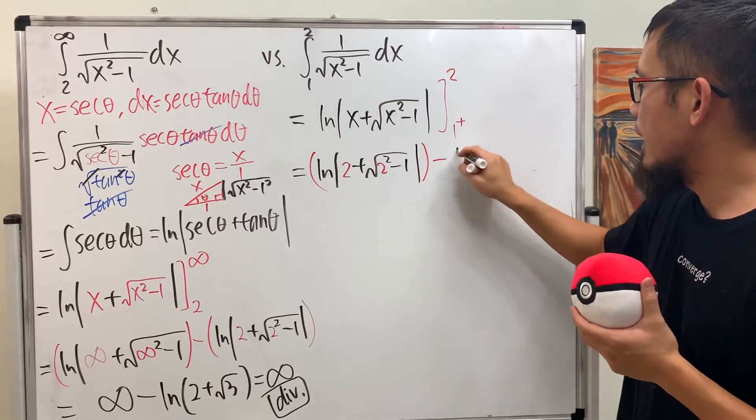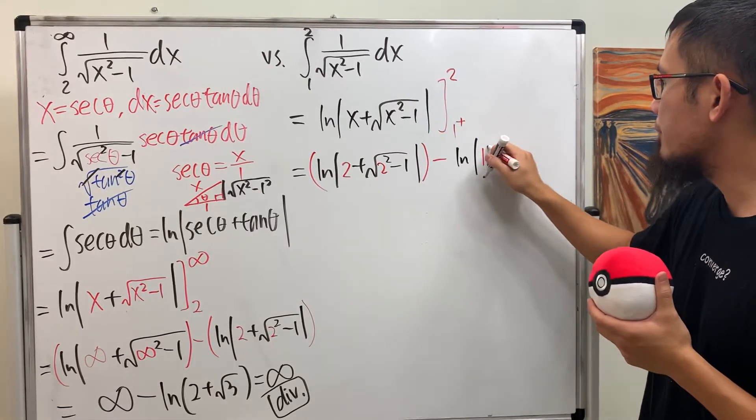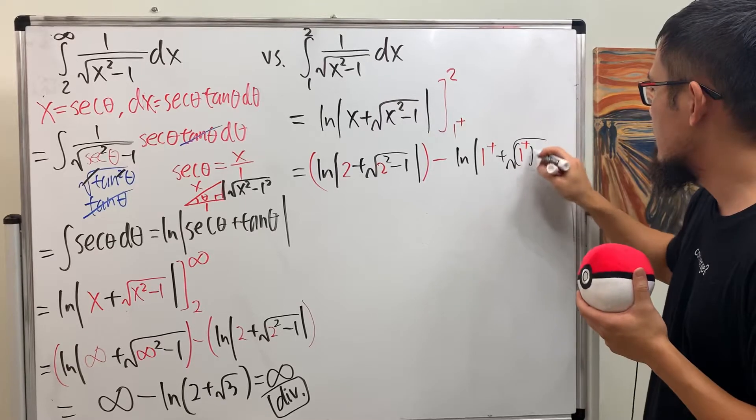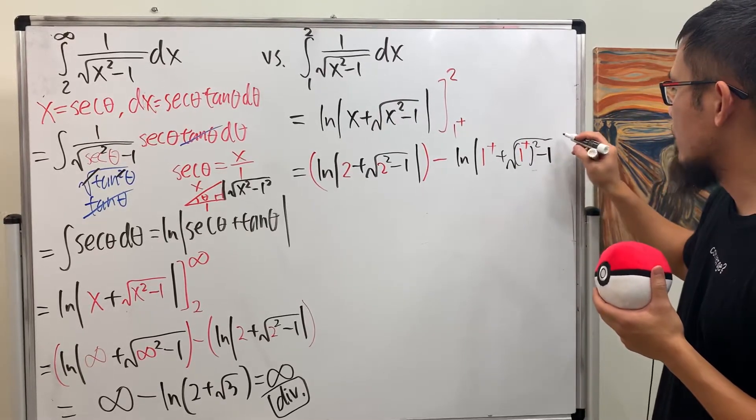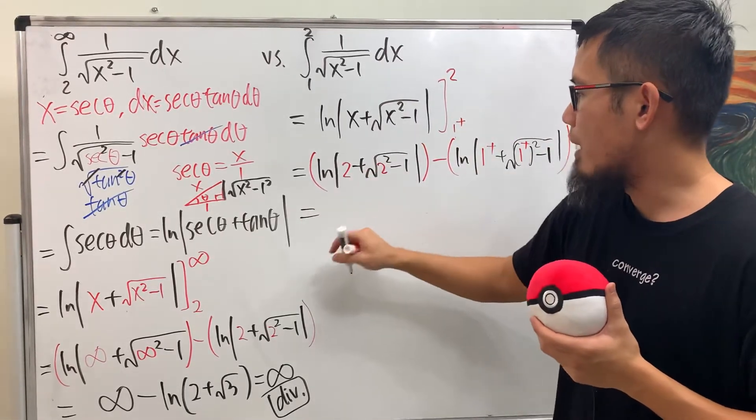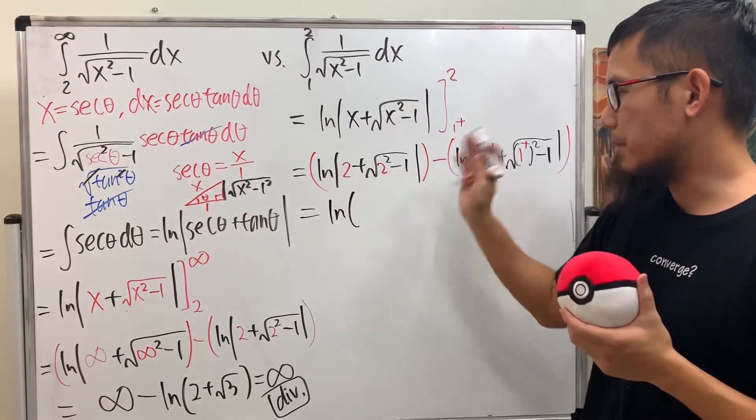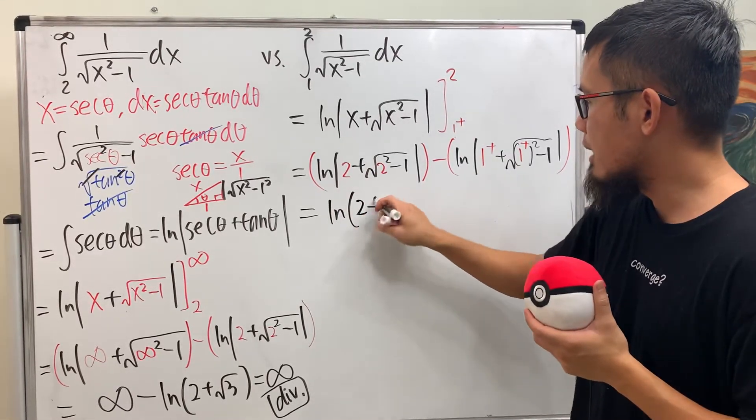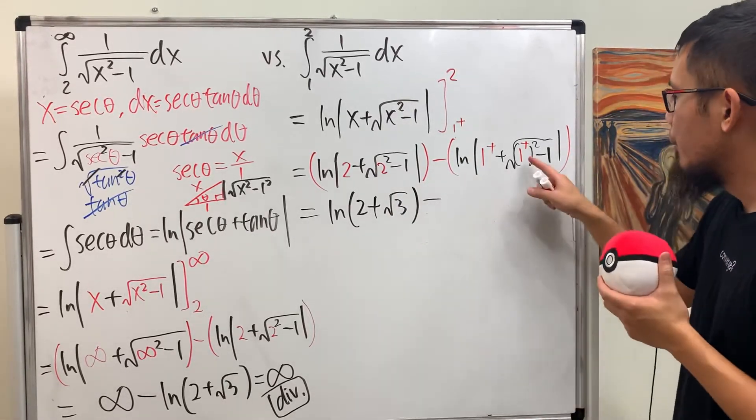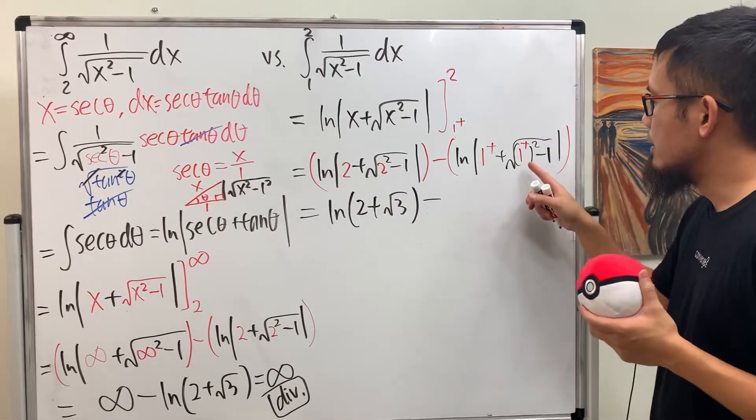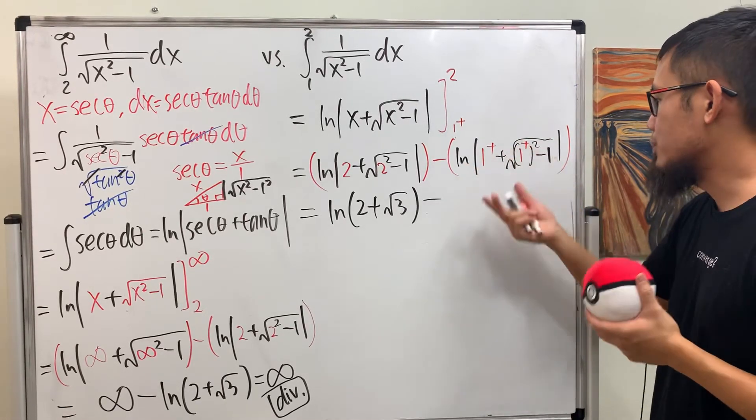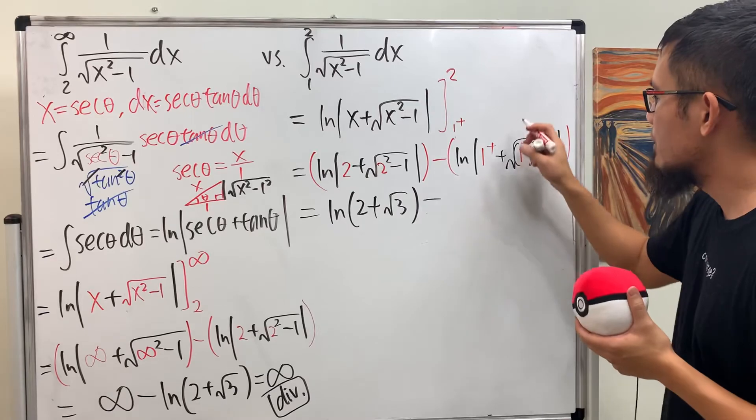And then minus ln absolute value 1 plus, and then plus square root of 1 squared, and then minus 1 like so. Okay, the first part, we get ln of, things as positive, that's why I changed to parentheses, this is 2 plus square root of 3. And then minus, have a look, 1 squared is still 1, and then minus 1 is 0, square root of 0 is 0, in the end you get ln of 1, which is like ln of 1, so all in all, this right here is just 0.